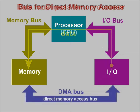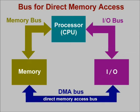We can solve this problem by adding a third bus between our I/O device and memory. Because the device can now deal directly with memory, we call this bus a direct memory access, or DMA bus. However, this means that the computer system now has three separate, completely independent buses.